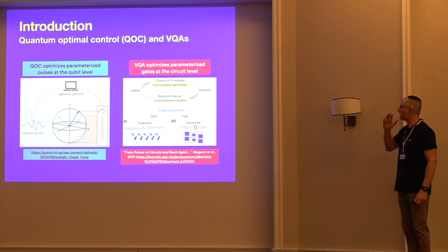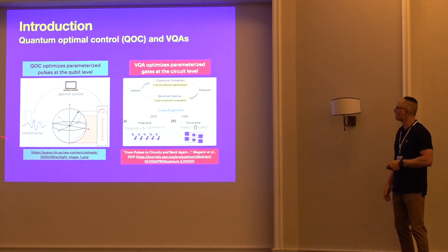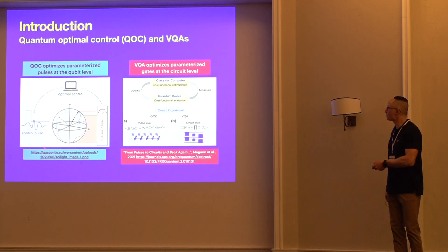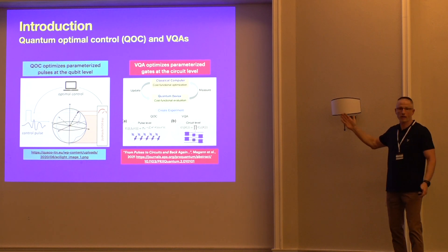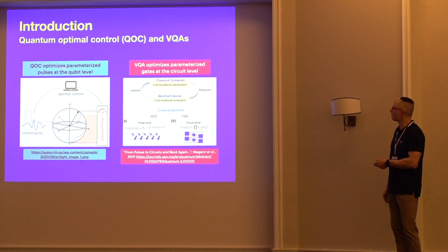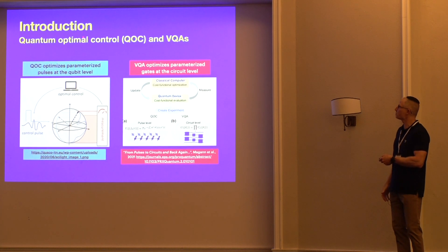The last slide related to that is the issue of quantum optimal control. So when you're designing these pulses, typically what's done in quantum optimal control is you're trying to optimize a parameterized pulse to achieve a target state or implement a gate with a certain level of fidelity. So quantum optimal control optimizes parameterized pulses at the qubit level.